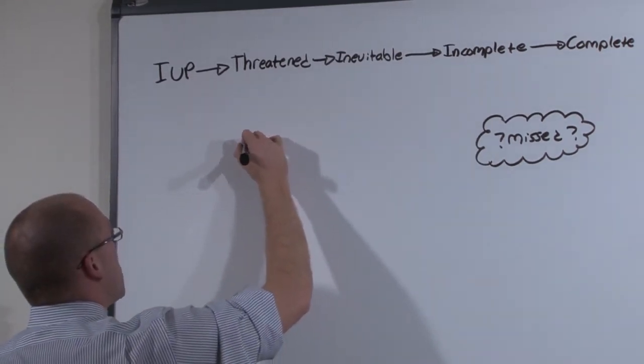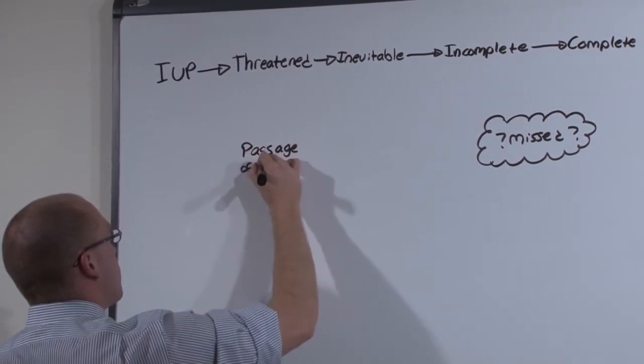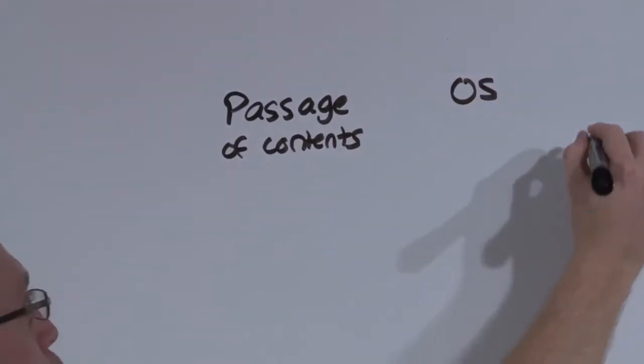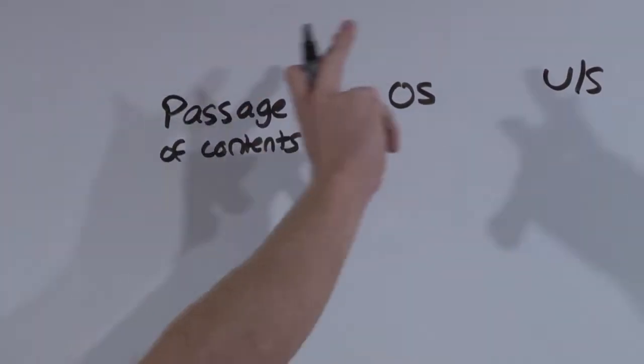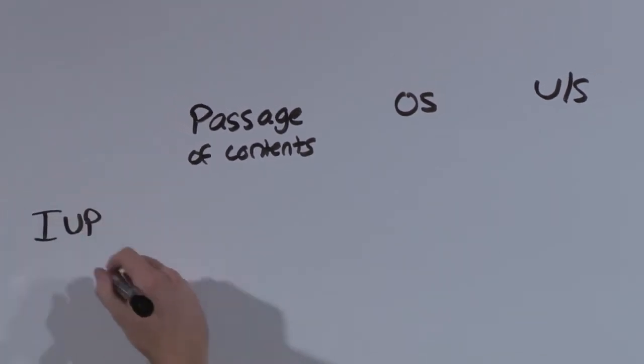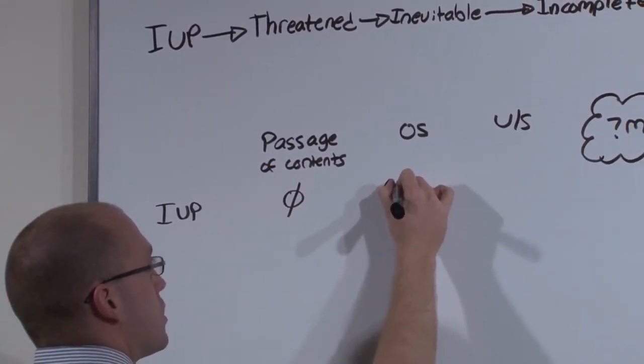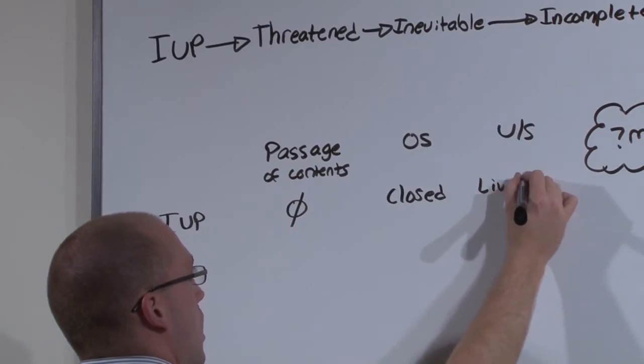You're going to use the passage of contents, the state of the os, and what you see on ultrasound to determine where she is along the process. A normal intrauterine pregnancy is going to have no passage of clots or contents because baby is still alive, the os is closed, and the ultrasound shows live baby.